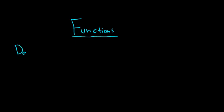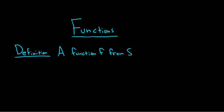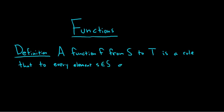We'll start by defining a function. A function f from S to T is a rule that assigns to every element little s in capital S an element little f of s in capital T.